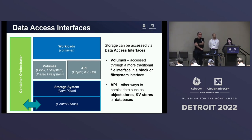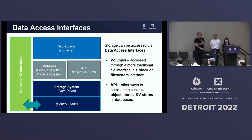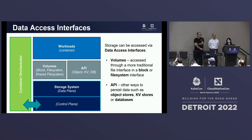For object stores, we have a project called COSI — Container Object Storage Interface — aimed at adding object storage support into Kubernetes. That project reached the alpha stage in the 1.25 release of Kubernetes.